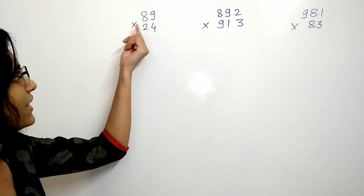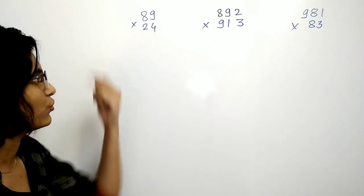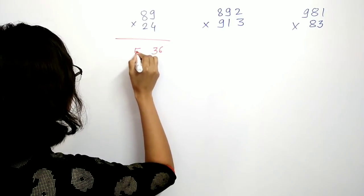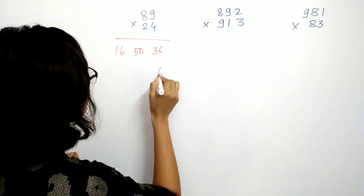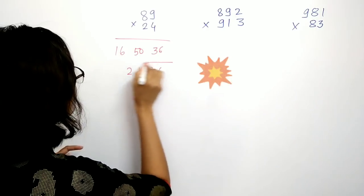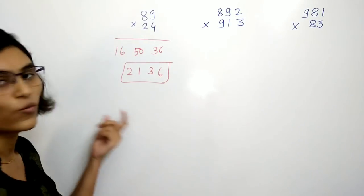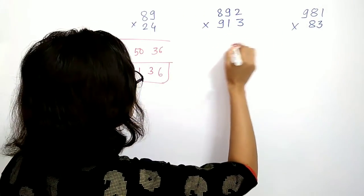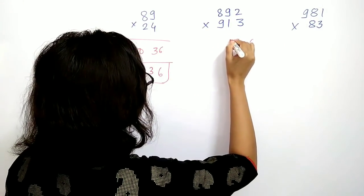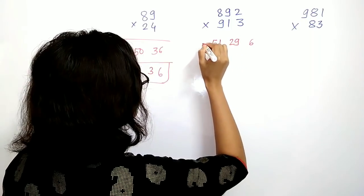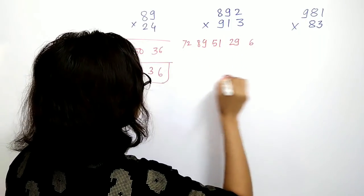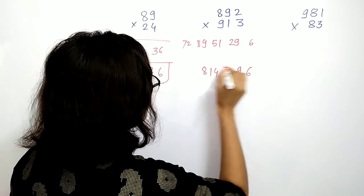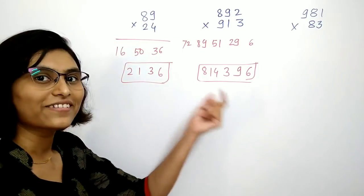Here we have 89 multiplied by 24. The answer to this is 2,136. The second one is 892 multiplied by 913, and the answer is 814,396.